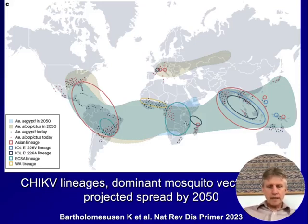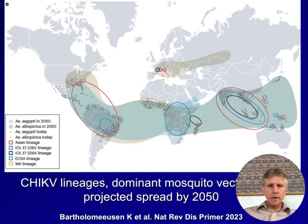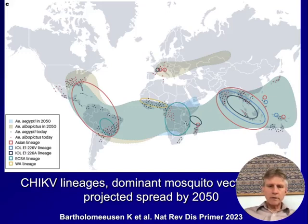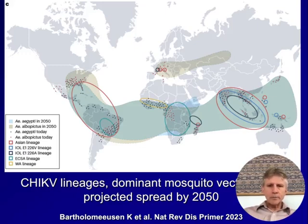This figure estimates the spread of chikungunya by 2050, driven by changing epidemiology due to global warming, aberrant weather patterns, and the more widespread distribution of competent vectors — in particular Aedes albopictus — in Western Europe and the United States.